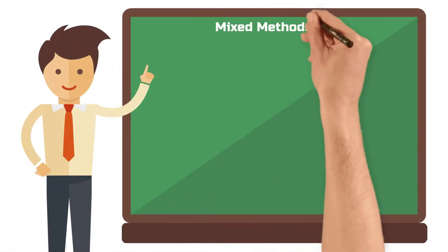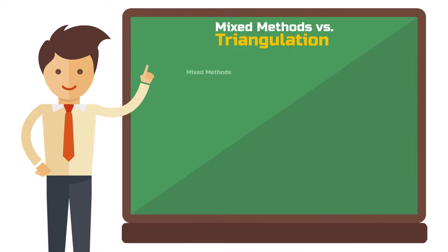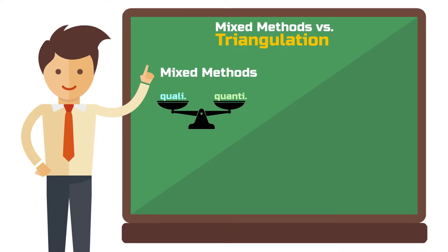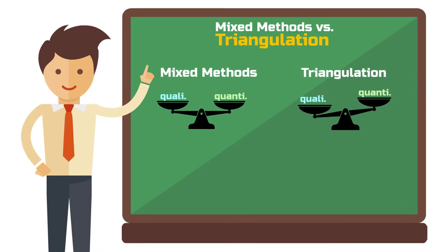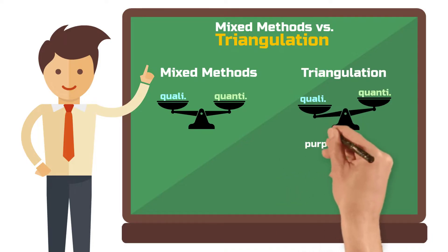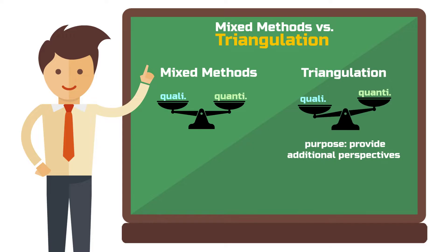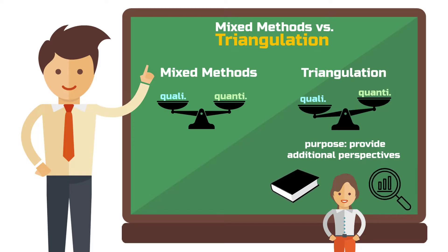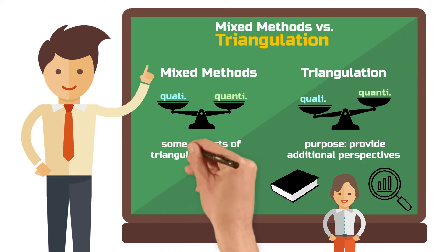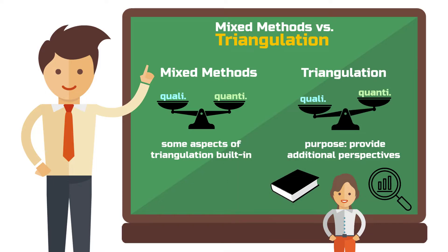What is the difference between mixed methods and triangulation? In mixed methods, your qualitative and quantitative parts are typically treated equally. If one method is only worth about 10% or so, then you can also speak of triangulation. The purpose of triangulation is to provide additional perspectives to the object under study — for example by adding additional researchers, another theoretical perspective, or additional data that differs from the main study. Mixed methods is highly respected because it has some aspects of triangulation already built in. However, you can also perform triangulation without using quantitative and qualitative elements. Therefore, mixed methods and triangulation are related concepts, but not the same.